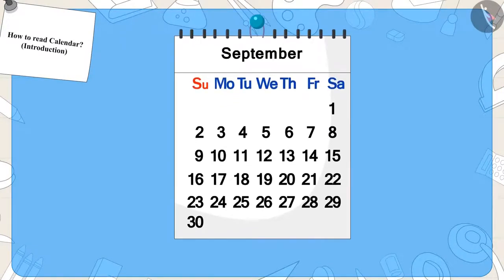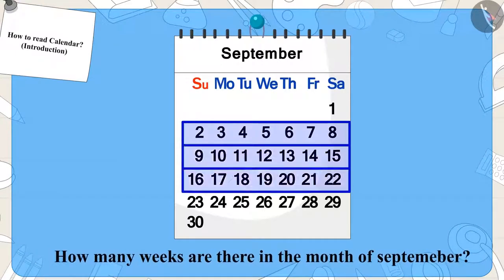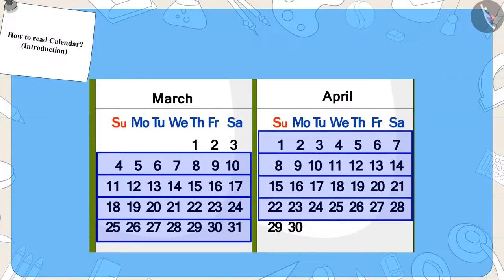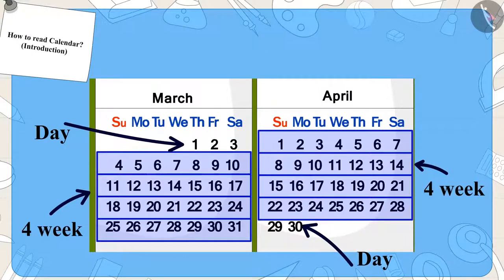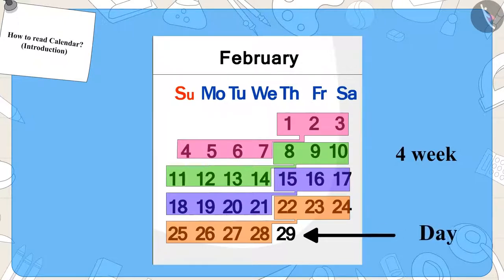Children, can you tell how many weeks are there in the month of September? Exactly — four weeks and a few days. And if you look closely, you will find that there are four weeks and a few days in every month. There are four weeks only in the month of February, and in certain years, it is four weeks and one day in February.